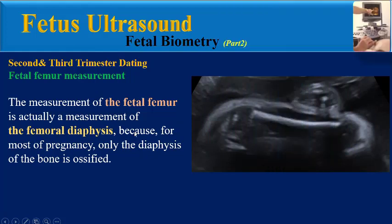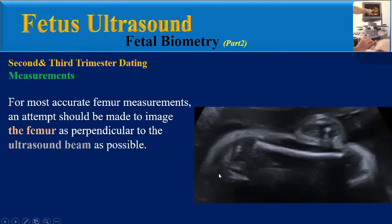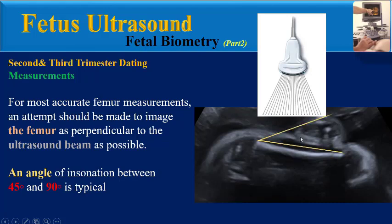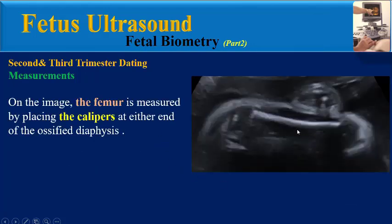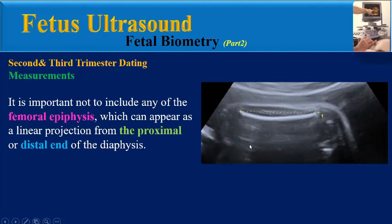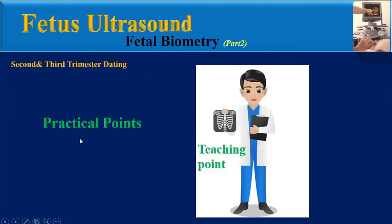For fetal femur measurement, what is actually measured is the femoral diaphysis, because for most of pregnancy only the diaphysis is ossified. For the most accurate measurements, the femur should be imaged as perpendicular to the transducer beam as possible, though an angle of insonation between 45 and 90 degrees is typical. The calipers are placed at either end of the ossified diaphysis. It is important not to include any of the femoral epiphysis, which can appear as a linear projection from the proximal or distal end.